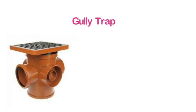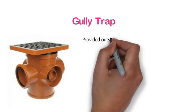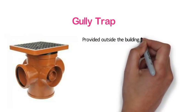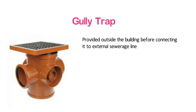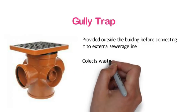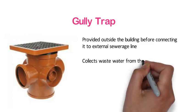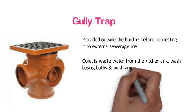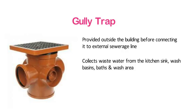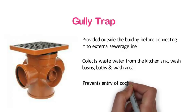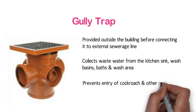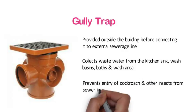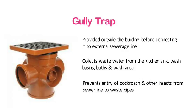Gully trap. A gully trap is provided outside the building before connecting it to the external sewage line. It collects waste water from the kitchen sink, wash basin, baths and wash area. It also prevents the entry of cockroaches and other insects from the sewer line.